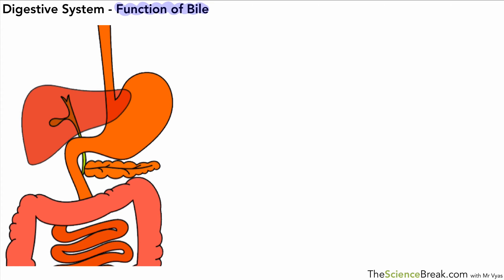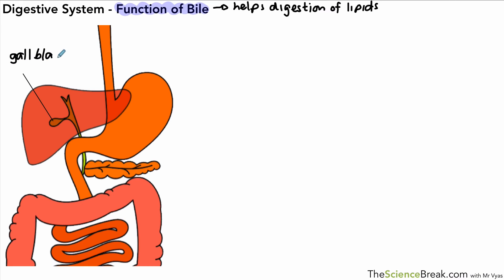Now we need to look at what bile does. Bile is a substance that helps with the digestion of lipids only — and lipid digestion only starts when food reaches the small intestine. The gallbladder stores bile, which is actually produced in the liver. The gallbladder releases bile into the small intestine as and when it's needed.